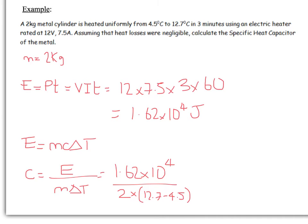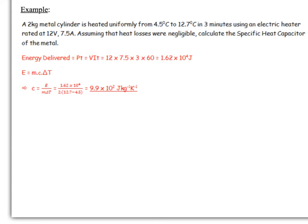We know M was 2 and we know this was 12.7 minus 4.5. We don't need to change to Kelvin because we're looking at a temperature difference here. The temperature difference in Kelvin is the same as the temperature difference in degrees. If we calculate that you should get 9.9 times 10 to the 2 joules per kilogram per degree Kelvin.